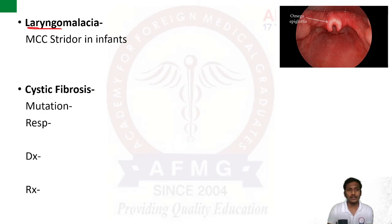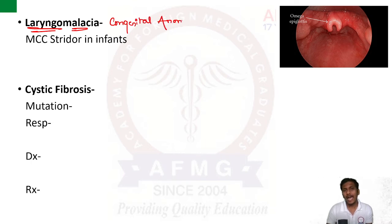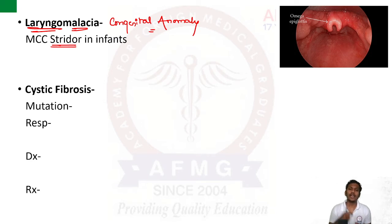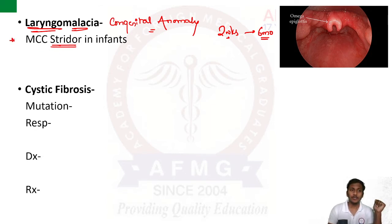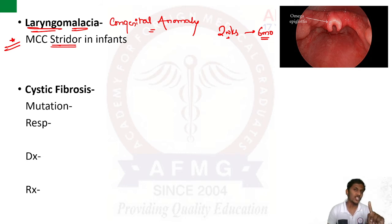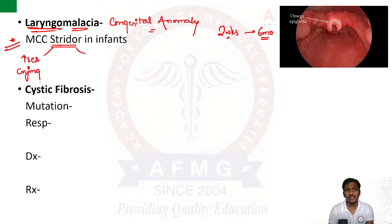Next condition: laryngomalacia — a congenital anomaly where the child presents mostly with stridor at around two weeks of life, which generally increases up to six months of age. Important one-liner: laryngomalacia is the most common cause of stridor in infants. This stridor increases on crying or agitation, whereas it decreases if the child is placed in the prone position.